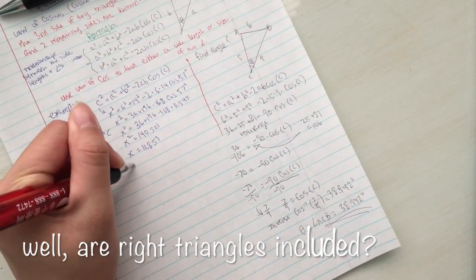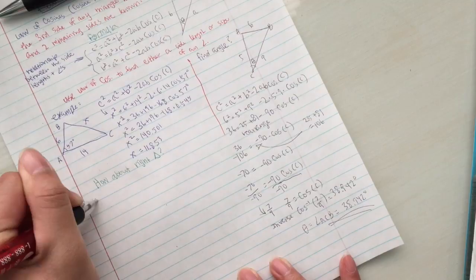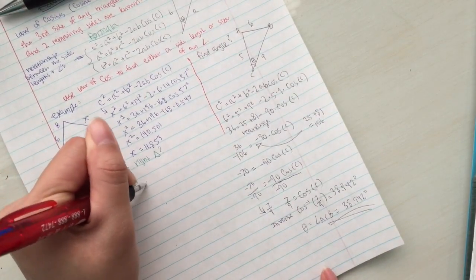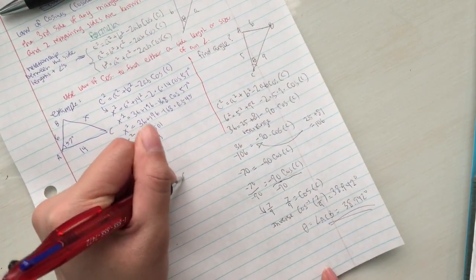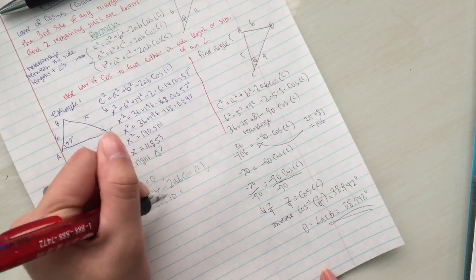As for right triangles, the law of cosine works in conjunction with the Pythagorean theorem. For example, the cosine of a right angle is 0. So in c squared equals a squared plus b squared minus 2ab cosine of c, cosine of c equals cosine of 90, which equals 0.